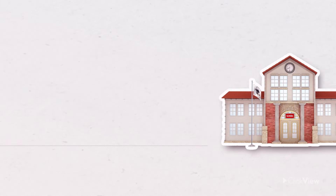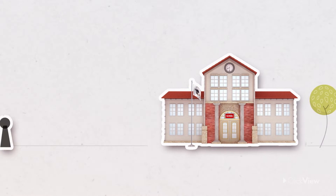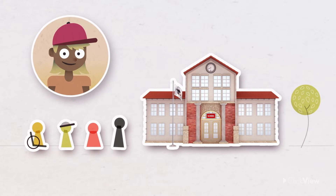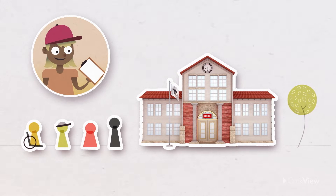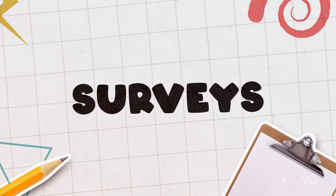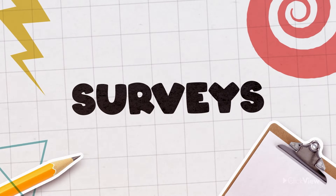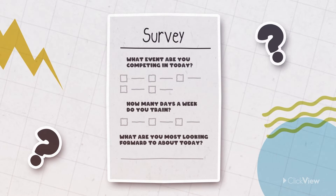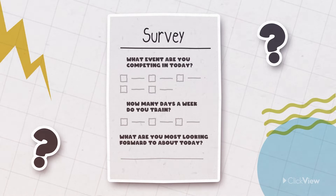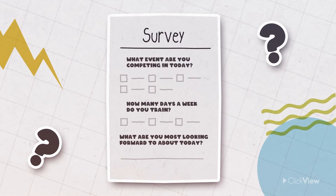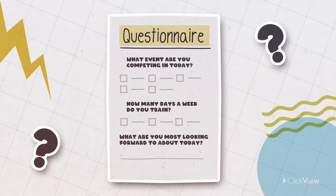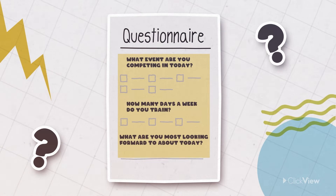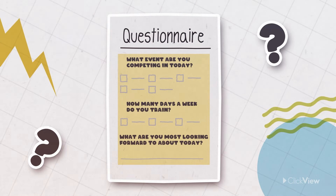Before the competition starts, I'm going to collect some data about the people joining us today. One of the ways we can collect data is by carrying out a survey. A survey is a set of questions that we ask people to gather information from them. Another name for a survey is a questionnaire. When designing a survey, you need to think carefully about the questions you want to ask, and how many people are going to answer them.